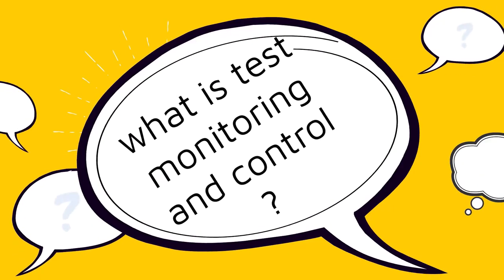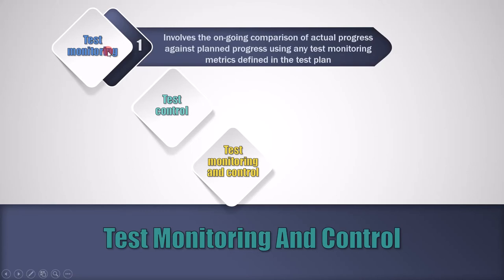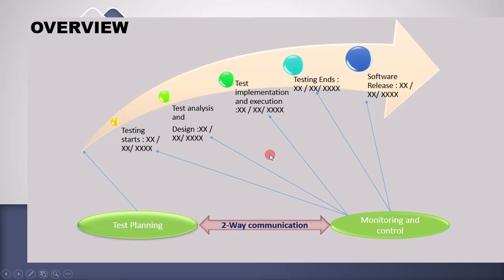Now let's see what is test monitoring and control — specifically what is test monitoring, test control, and test monitoring and control. Test monitoring involves the ongoing comparison of actual progress against planned progress using any test monitoring metrics defined in the test plan. In the test planning stage, we decide when the analysis will start and when it will end. While monitoring, we compare the current status of test analysis with the planned schedule. This is nothing but monitoring the current stage of the test analysis.